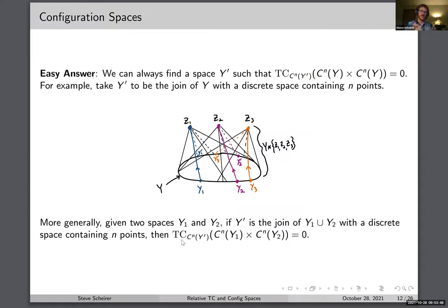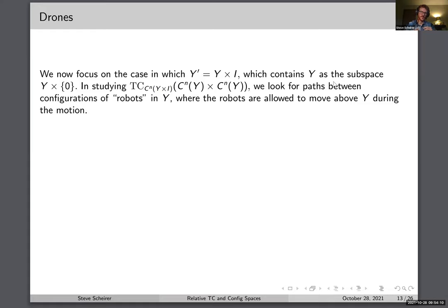But if we can't choose Y prime freely, we focus on the natural case where the larger space is Y times I — the product of the underlying space with the unit interval. This contains Y as a subspace at the zero level. The idea is Y is on the ground floor and you allow yourself to move up and down, like drones that can move up and down but must stay directly above Y.